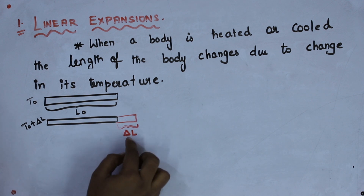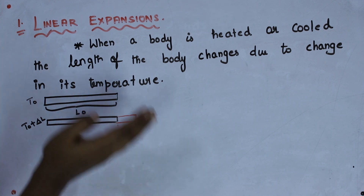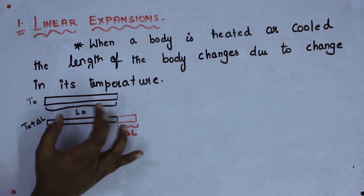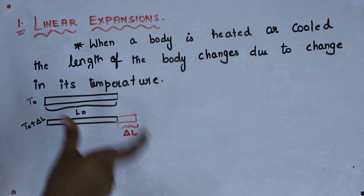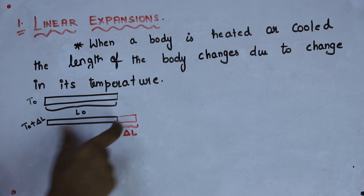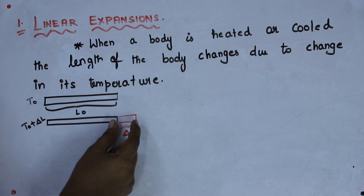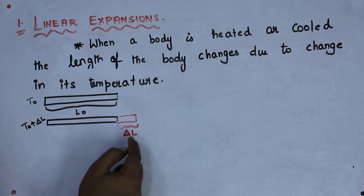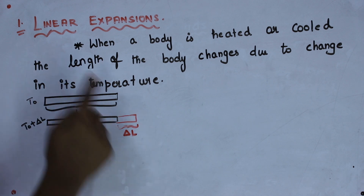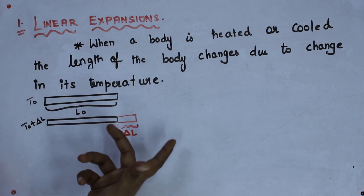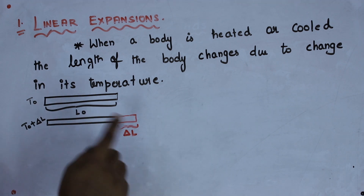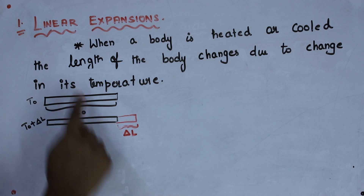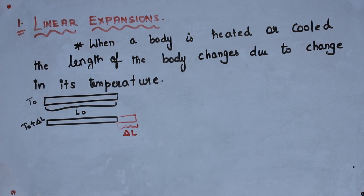Before heating, the length of the rod is L₀, which is the original length of the rod. After applying the temperature, the rod expands, and that expansion I am considering as delta L. So, linear expansion is when the length of the rod changes due to temperature. We have a formula for linear expansion.